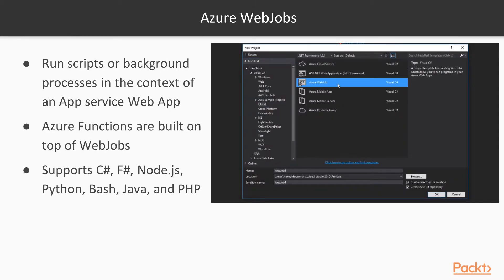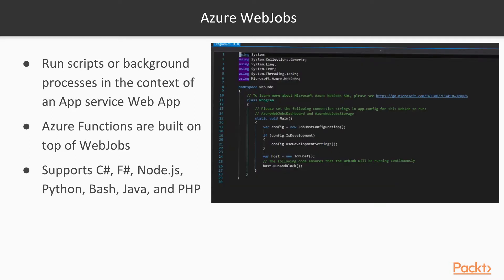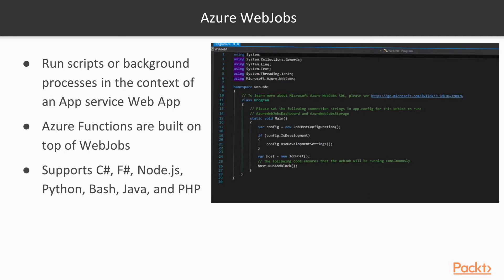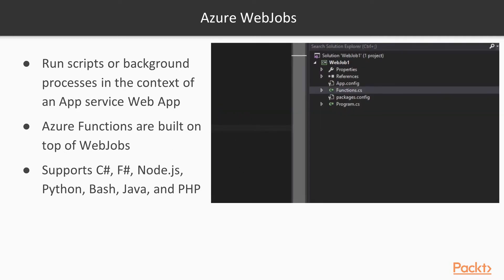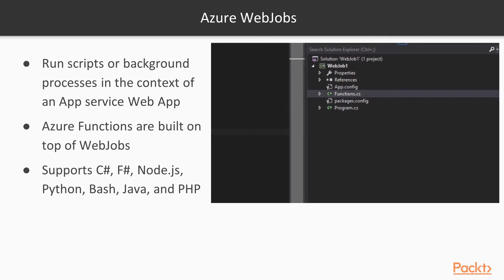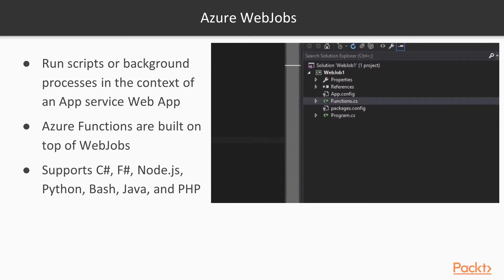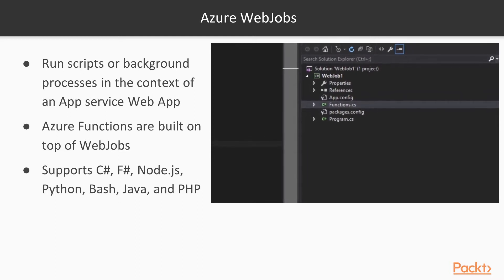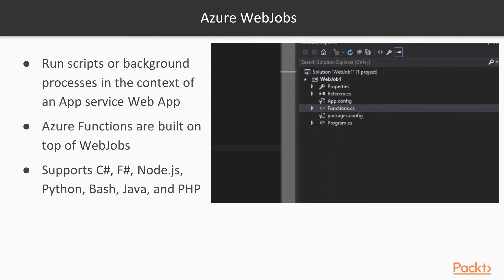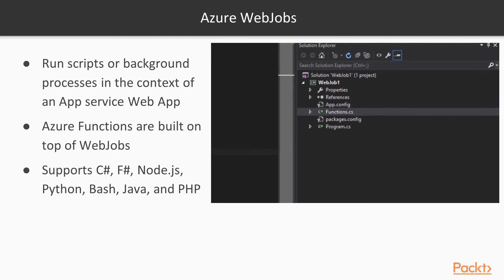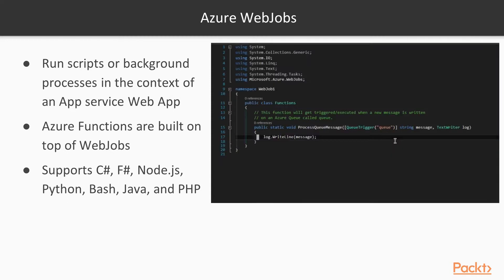That brings us to Azure Web Jobs. Azure Web Jobs allow you to run scripts or background processes in the context of an App Service web app. Azure Functions are actually built on top of Web Jobs, which is where they get their power. Web Jobs support C#, F#, and Node — that's where Azure Functions gets that. But Python, Bash, Java, and PHP are actually much better supported under Azure Web Jobs than they are with Azure Functions.